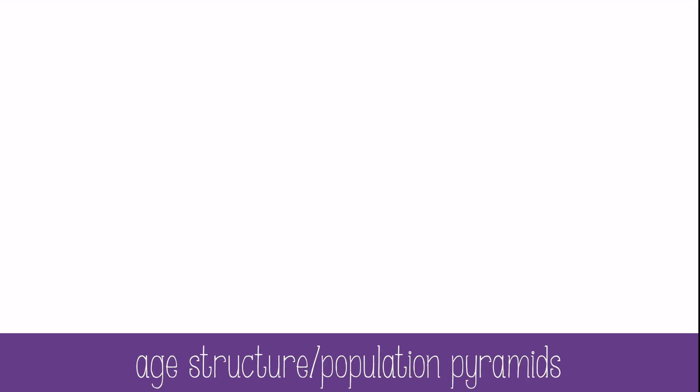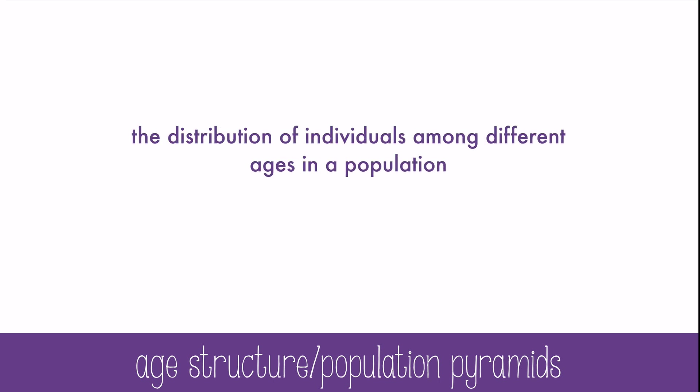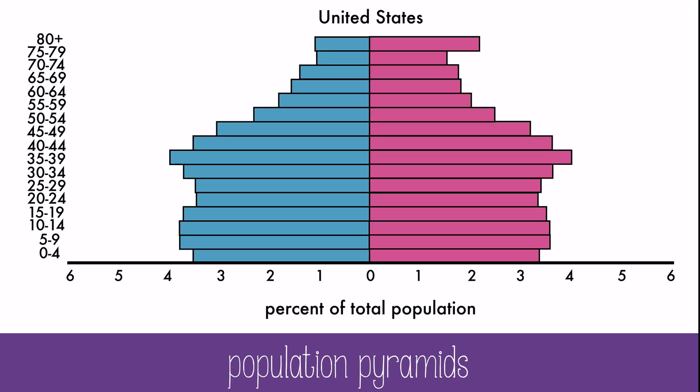The distribution of individuals among different ages in a population is called age structure. Age structures are often represented in graphs or population pyramids. Here's a population pyramid for the United States. It's fairly stable and doesn't actually look that much like a pyramid. On the left are the males of the population, and on the right are the females. You can see that it's more rectangular than pyramidal.